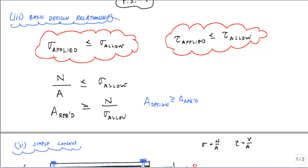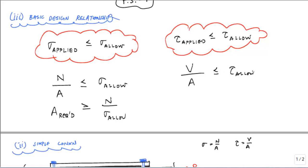The same applies for shear. We use the relationship: V_applied divided by the area must be less than or equal to τ_allow. Similarly, the required area is greater than or equal to V over τ_allow. This tells us how much area we need in shear. For example, when designing a bolt considering shear failure, this tells us how much bolt area we need, and from that we can choose the appropriate bolt diameter.